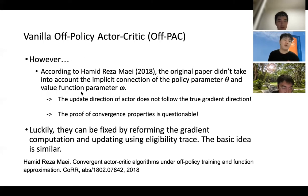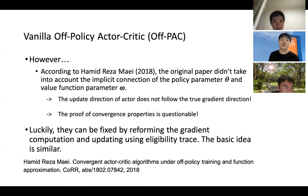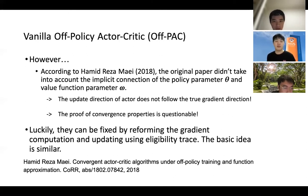However, according to Hamid, the original paper did not take into account the implicit connection of the policy parameter theta and the value function parameter omega. This results in the update direction of the actor not following the true gradient direction, and the proof of convergence in the original paper is also questionable. Luckily, these problems can be fixed by reforming the gradient computation and updating everything using eligibility traces.